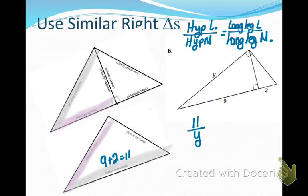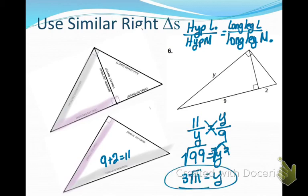So now I'm going to put numbers in there. 11, 9 plus 2, is to y as y is to 9. And I'm going to cross multiply. I'm going to get 99 equals y squared, but I don't want y squared, I want y. So I'm going to take the square root of both sides. And that in simplest radical form is 3 square root of 11.